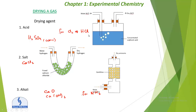To summarize the drying agents: for chlorine and HCl gas, use concentrated sulfuric acid — moist gas enters and dry gas exits. For hydrogen gas, use fused calcium chloride — moist hydrogen in, dry hydrogen out. For ammonia, use calcium oxide or calcium hydroxide — moist ammonia in, dry ammonia out. You cannot use sulfuric acid for ammonia because it reacts with it. That is why we have three different drying agents for different gases.